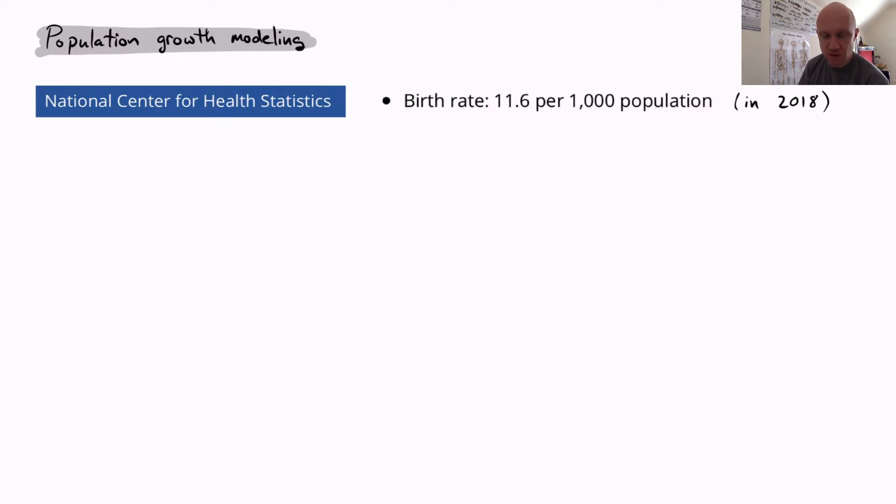So I went to the National Center for Health Statistics website and I found this little fact. In the year 2018, the birth rate in the United States was 11.6 people per 1,000 people. I'd like to think a little bit about what this fact means and use it to develop a mathematical model for population growth in the US.